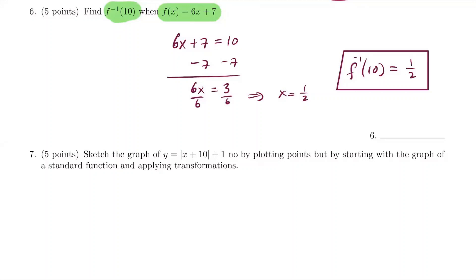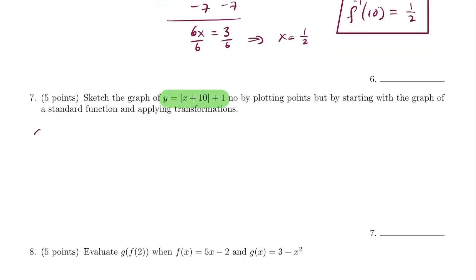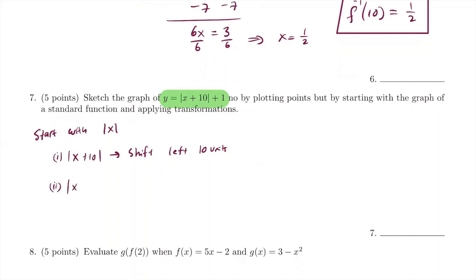For number 7, we're going to sketch y = |x + 10| + 1 using transformations. We start with the parent function |x|, which looks like a V. Then |x + 10| shifts the graph left 10 units. Finally, adding 1 shifts the graph up one unit. So the final sketch is the absolute value V shape shifted left 10 and up 1.